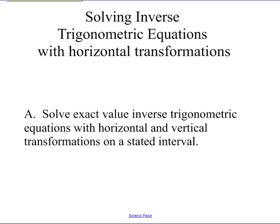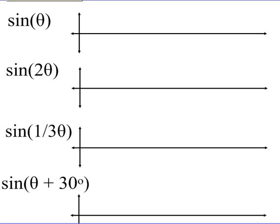What we've done so far is no transformations at all or vertical transformations. Before we start, let's take a quick look at what horizontal transformations do to our graph. In the case of sine of theta, our graph goes up one, down one, back up, down, and so forth. One period is 360, so half of that is 180.